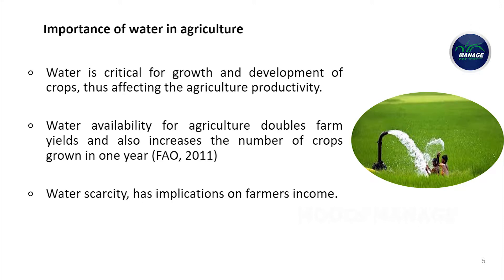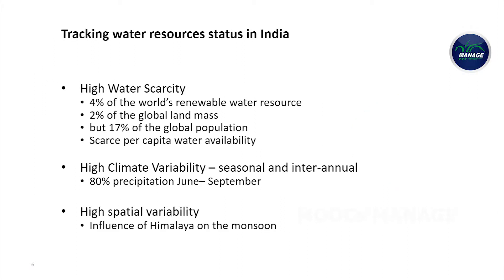Water is very important for agriculture. Water contributes to higher production and productivity of agriculture, and therefore has an important implication on the income of farmers. When we look at the water resources of the country, India accounts for more than 4% of the water resources and has just about 2% of the land mass, but we are 17% of the global population. So the per capita availability of water in India is less compared to the global average.